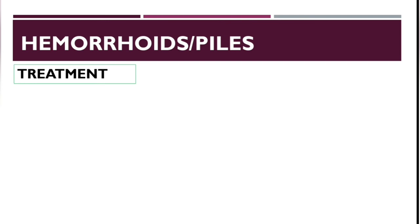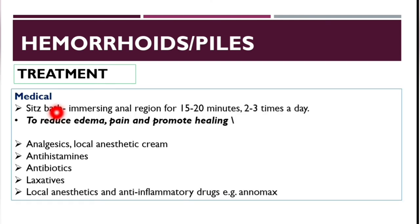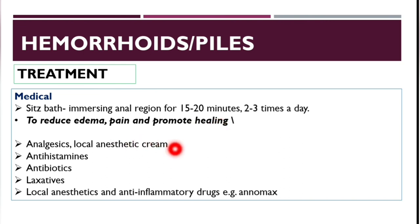Treatment of hemorrhoids is divided into medical, parasurgical, and surgical. Medical treatment includes sitz baths — immersion of the anal region in warm water for 15–20 minutes, two to three times per day — to reduce edema, pain, and promote healing. Other medical treatments include analgesics, local anesthetics, antihistamines, antibiotics, laxatives, and anti-inflammatory drugs.